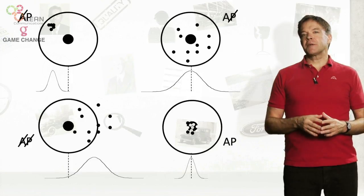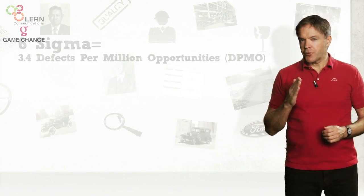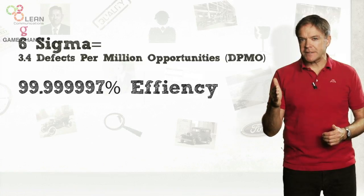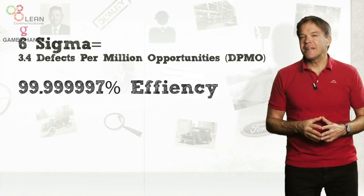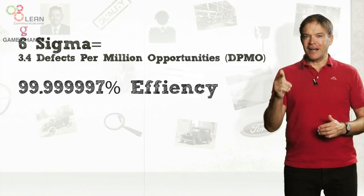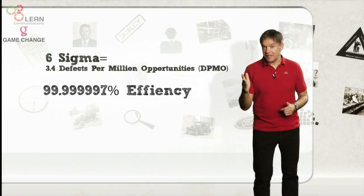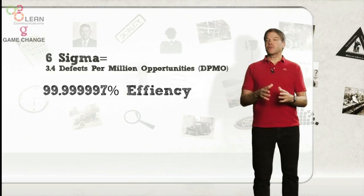Six sigma performance is equal to 3.4 defects per million opportunities or 99.999997% efficiency. Is this realistic?